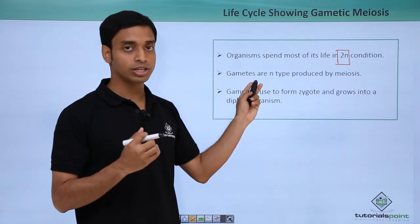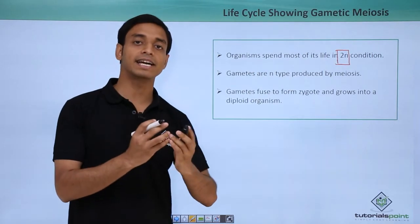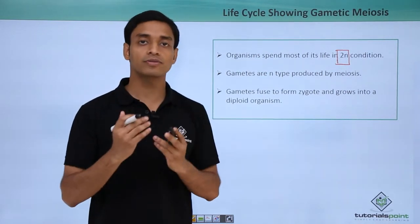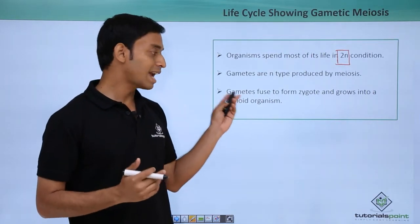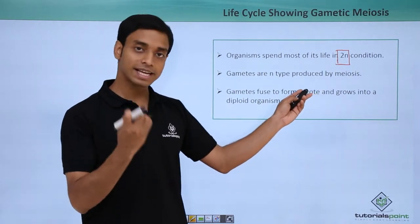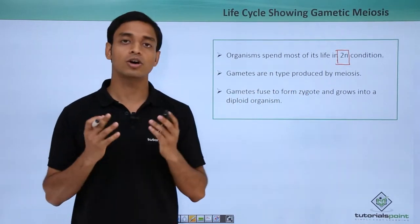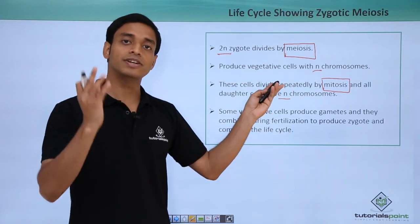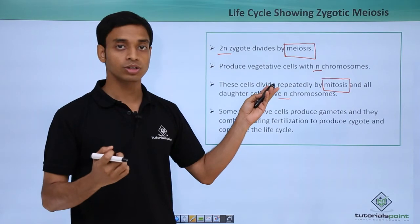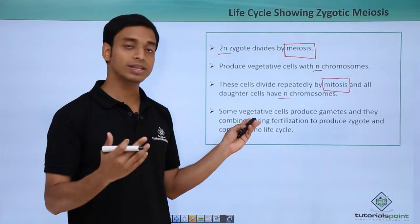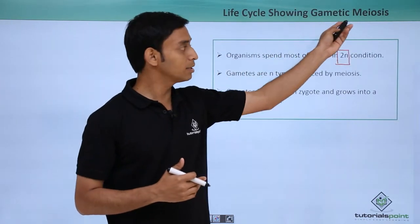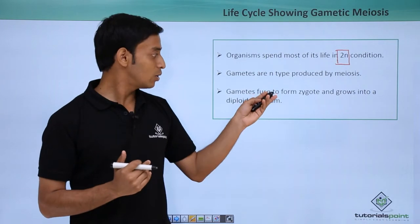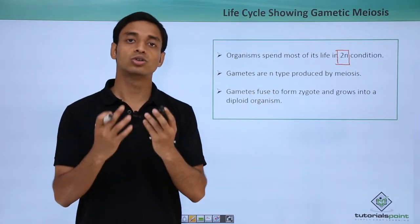Here the gametes which are produced are of N type, and since they are N type we can understand they use the process of meiosis and not mitosis, because in meiosis the number of chromosomes is reduced or halved. The gametes will fuse to form a zygote with N number of chromosomes, which will then grow into a diploid organism. In gametic meiosis the organisms maintain themselves in 2N, divide through meiosis, and the gametes formed fuse to produce a diploid zygote.